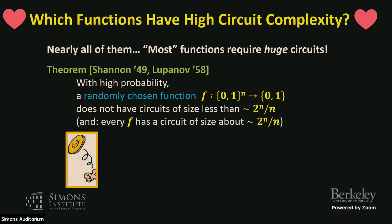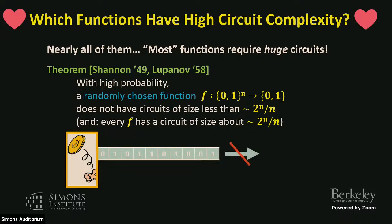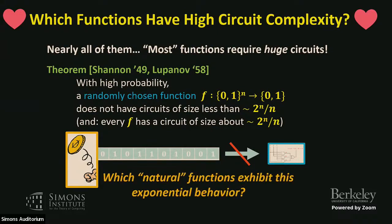In pictures: you're tossing a bunch of coins, you have some really long random bit string, and it does not have a small circuit. It's a simple counting argument. The big question we like to think about is which natural functions exhibit this exponential behavior — which functions that don't take too much Turing resources like time or space exhibit this kind of exponential circuit complexity.